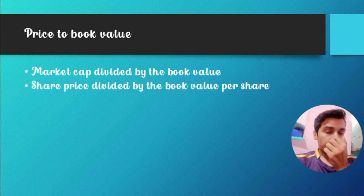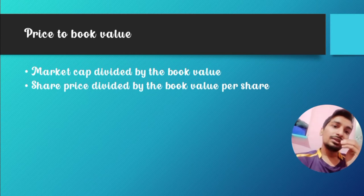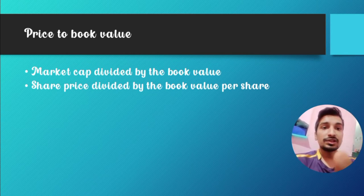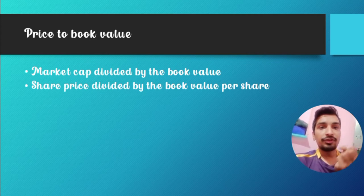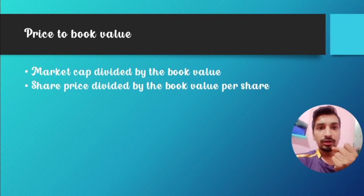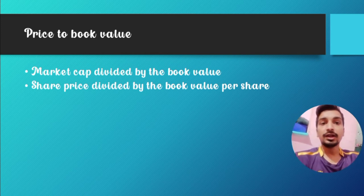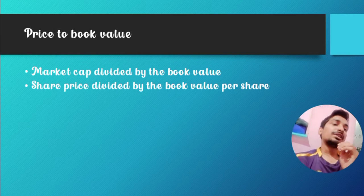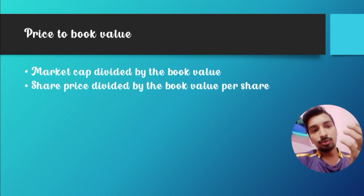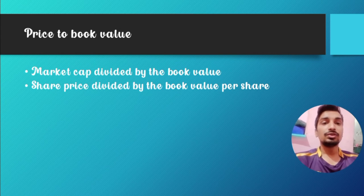If the price-to-book value is low, it means the book value per share is more but the share price is less, so the company is profitable and undervalued — you should consider buying. If price-to-book value is high, the company is overvalued because the share price is more than the book value. This can also be expressed as total shares times share price, divided by book value.